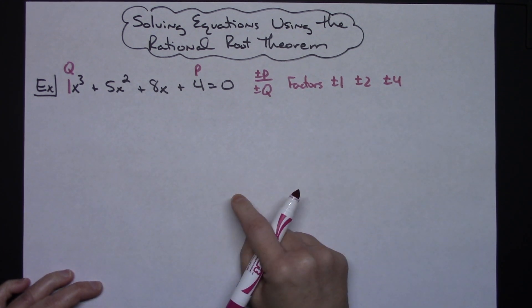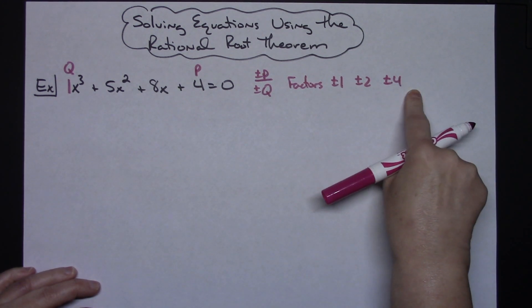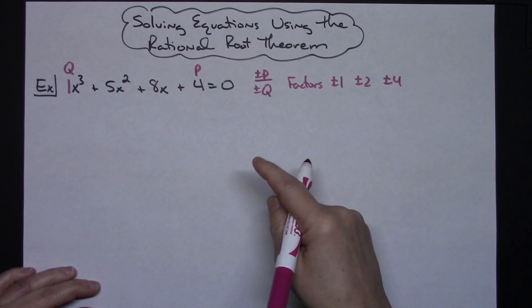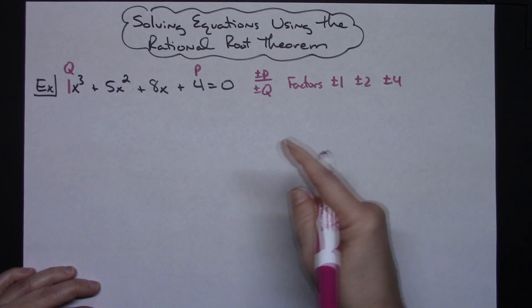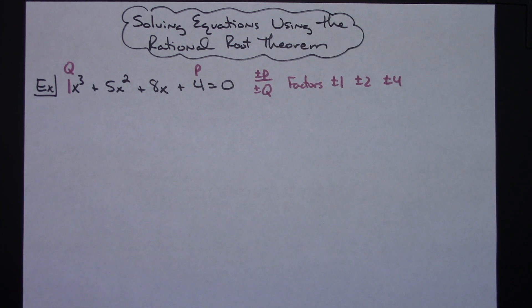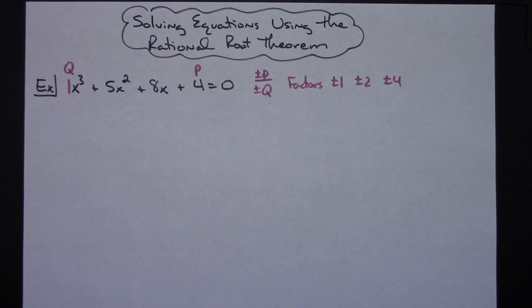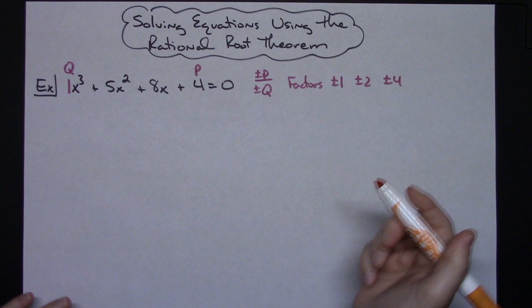You're going to then take a look at these and really in all honesty you're just going to pick one. You're going to pick one and do synthetic division over and over and over until you get one that works. Normally I will start with a plus or minus one or the plus or minus two. I usually don't start with the larger numbers but I definitely want to get one that doesn't work to show you what happens when it doesn't work.